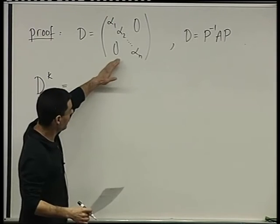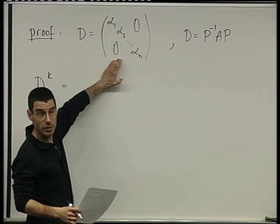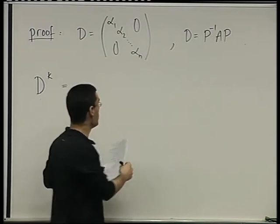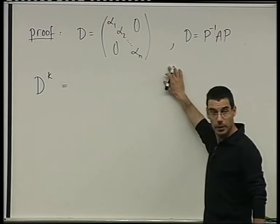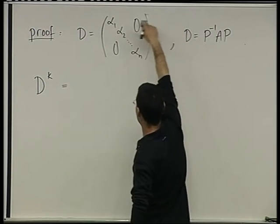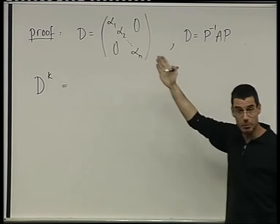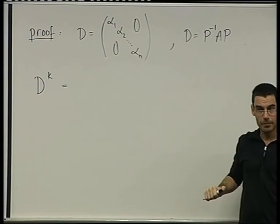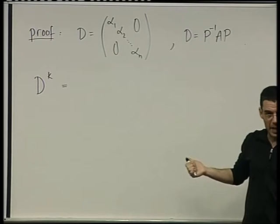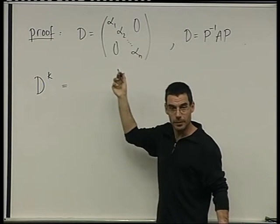So raising a diagonal matrix to a power, think of what we're doing. What is D squared, for example? D times itself. So the entry, any diagonal entry would be this row times this column. So it would just be raising that entry to the power 2. And any off-diagonal entry, it's going to be 0.